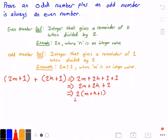Now if we let m plus k plus 1 equal n, so we're going to let it equal n, then if we rewrite our equation we get 2 times n.